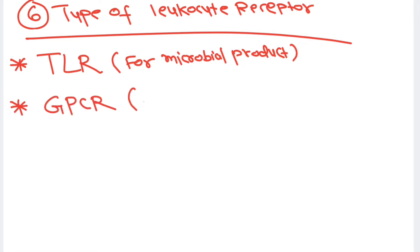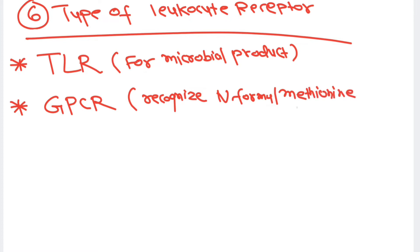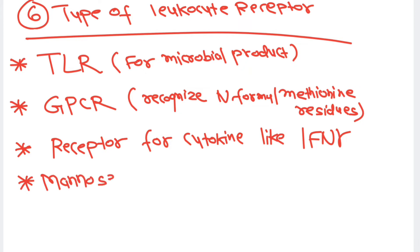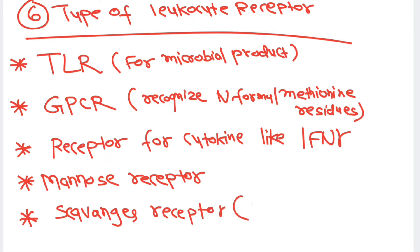The second receptor is the G-protein coupled receptor (GPCR), which recognizes N-formyl methionine residues and also performs chemotaxis — so chemotaxis and phagocytosis are interlinked. Leukocytes also have receptors for cytokine recognition, such as interferon-gamma, by which they can produce prostaglandins and leukotrienoic acids. Mannose receptors are also present, and another receptor is the scavenger receptor, which recognizes LDL cholesterol particles.